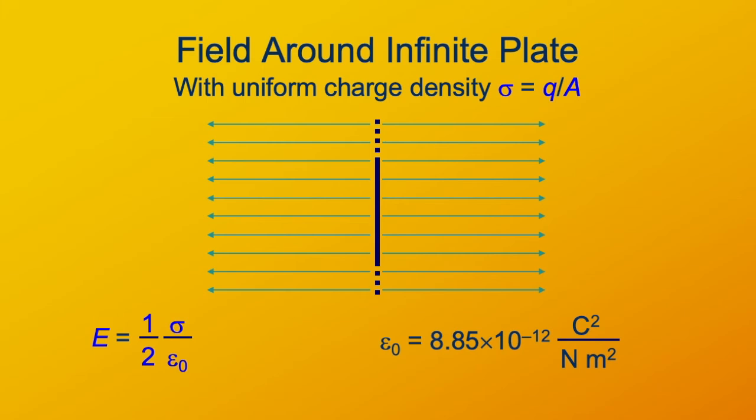Theoretically, the electric field, the strength of this uniform field has this very simple value, one-half sigma over epsilon-naught. Sigma, recall, is the charge density that we've got on this plate of charge. Epsilon-naught is one of those fundamental constants of the universe. This one's called the permittivity of a vacuum or the permittivity of free space. And it's got the value of 8.85 times 10 to the minus 12 Coulomb squared per Newton meter squared.